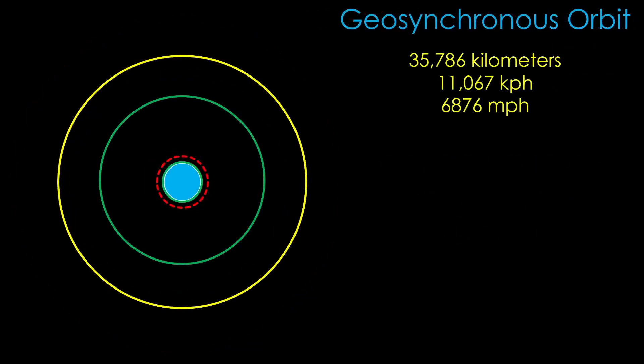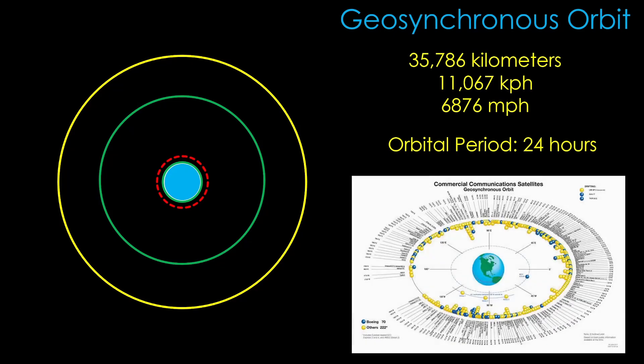Geosynchronous orbit is at 35,786 kilometers of altitude, and has an orbital speed of 11,067 kilometers per hour, or 6,876 miles per hour. At this altitude, the speed at which the satellite orbits is exactly the speed that the Earth turns, which gives an orbital period of 24 hours, which is the definition of a geosynchronous orbit. This is very convenient for communication satellites, and it turns out there are over 500 of them in this orbit.